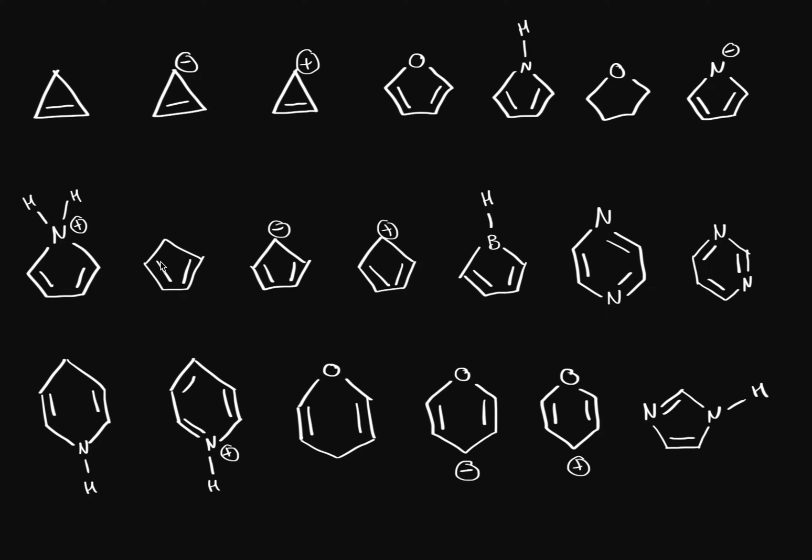What we're going to do is classify each molecule as either aromatic, anti-aromatic, or non-aromatic. Now how do we do that? First we have to check it's a cyclic structure. Good thing for us, all of these are cyclic structures, so that's out of the way.